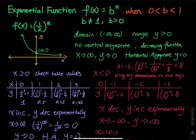Between zero and one we have decimals like 0.5, 0.25, and 0.75. While most textbook examples use bases like 2, 3, or 4, a typical example for a base between zero and one is f(x) = (1/2)^x. The graph of (1/2)^x has a domain of all real numbers, and since the curve is always above the x-axis, the range is y greater than zero.